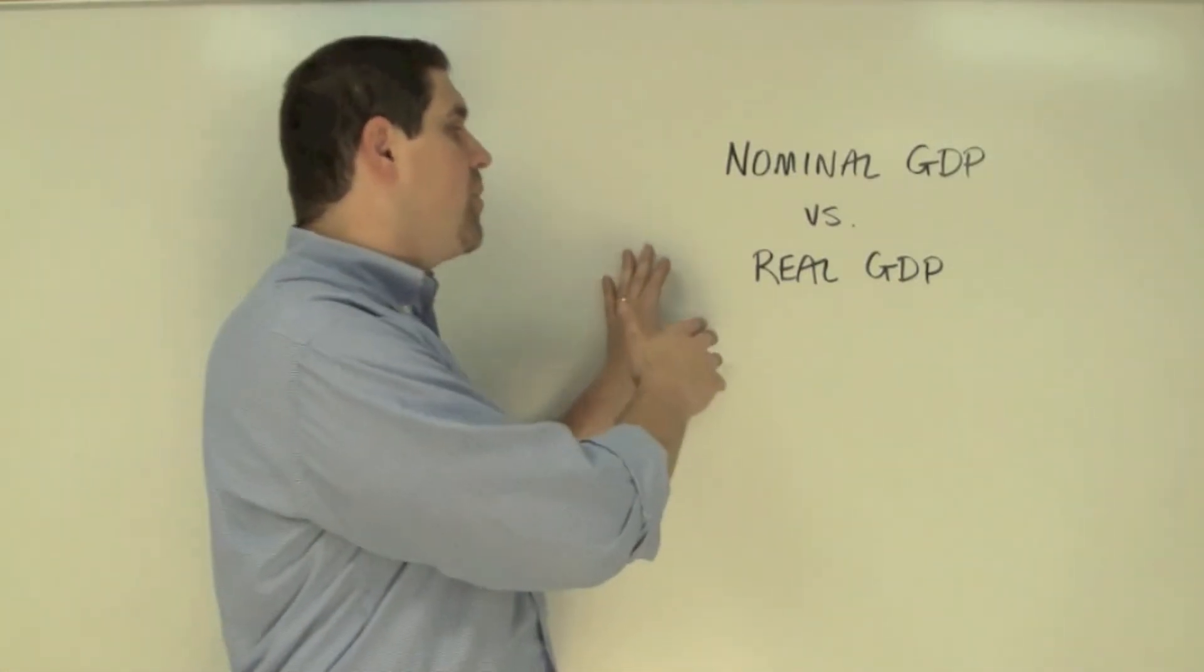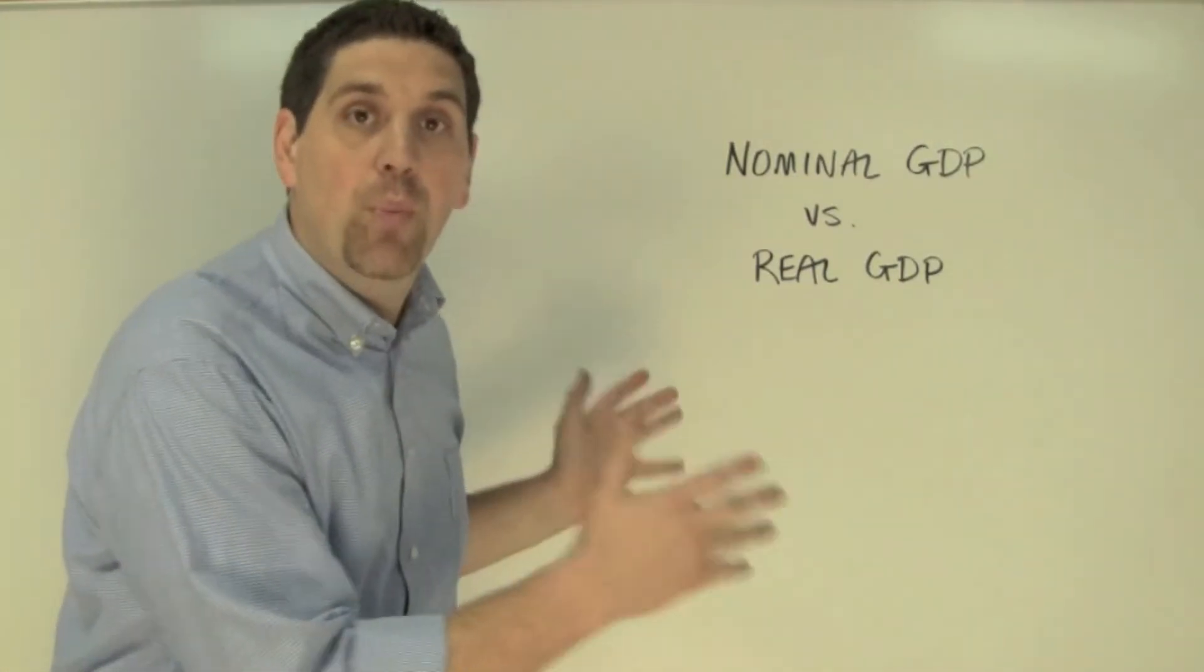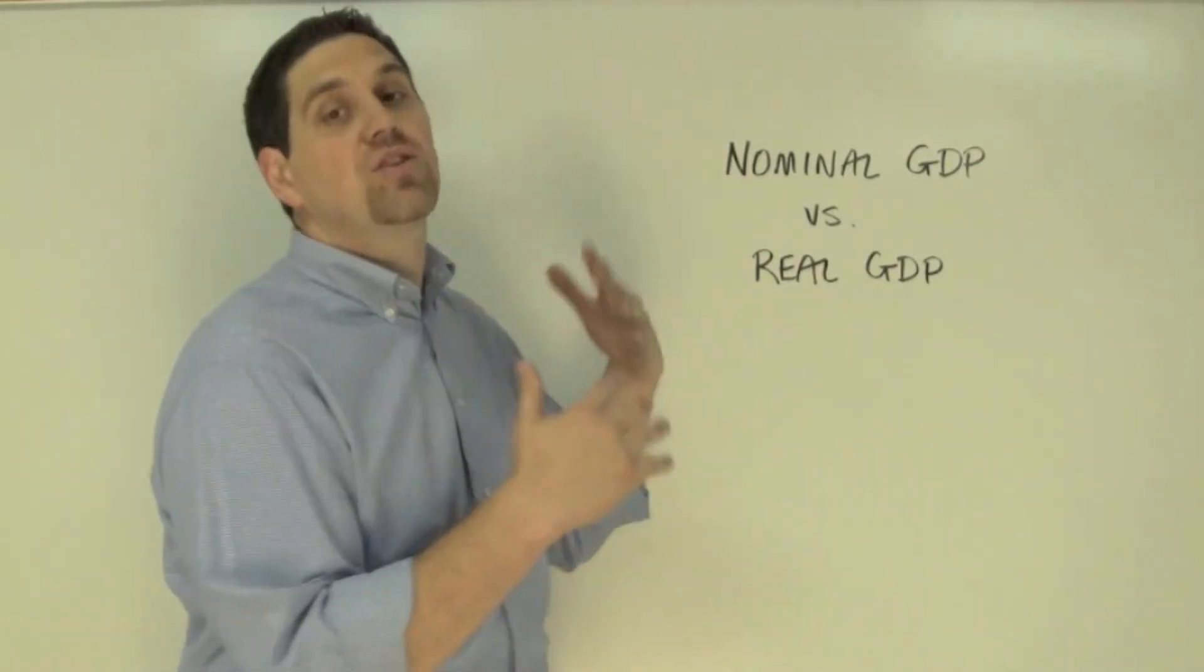Real GDP is a better way of figuring out how the economy is actually doing because it measures the actual output produced, not just the output plus all the prices that increased.